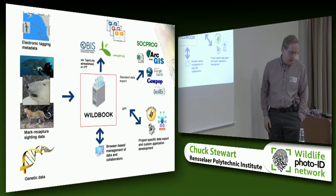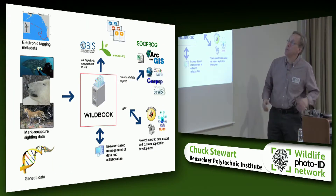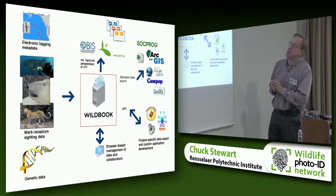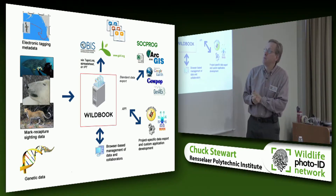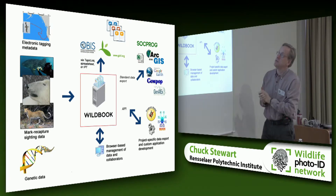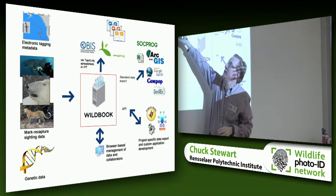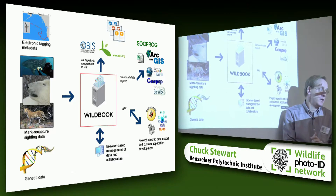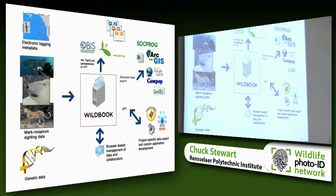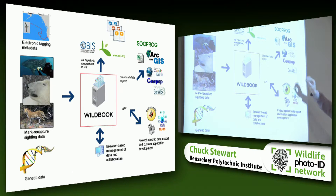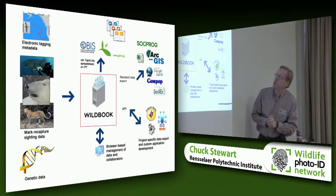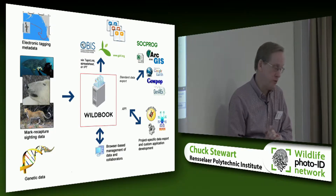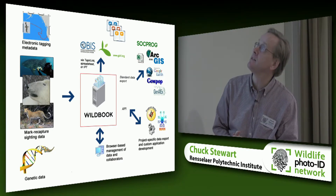Wildbook is an ecological data management system and data schema with underlying databases. In addition to photo information, it incorporates genetic data and other metadata, with exports to GIS systems and various ways to manage and exploit data.